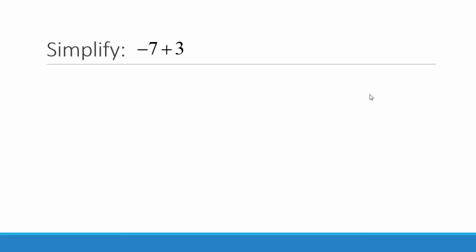Negative 7 plus 3. The signs are different so we're going to take the difference — subtract the numbers. The larger number minus the smaller number: 7 minus 3 is 4. To determine our sign we look at the biggest absolute value number, which is 7. The number 7 has a negative so our answer will be negative. If the signs are different you subtract the numbers and keep the sign of the bigger number.